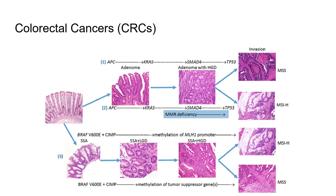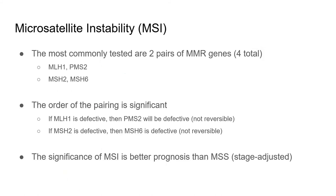BRAF V600E mutations are actually not very common. The goal of MSI testing is to look at the integrity of microsatellites associated with DNA mismatch repair genes. We target two pairs of mismatch repair genes: MLH1-PMS2 and MSH2-MSH6. The order of these pairs is important because the first enzyme in each pair is absolutely necessary for the second to function. If you have a defect in MLH1, PMS2 will be defective; if MSH2 is defective, MSH6 is also defective. But these relationships are not reversible. A defect of these mismatch repair enzymes actually leads to a better prognosis for the patient.